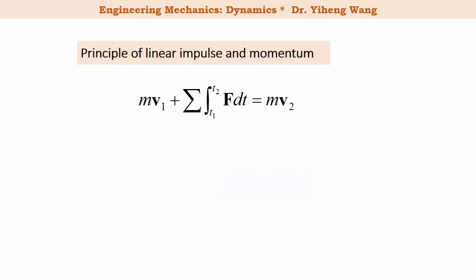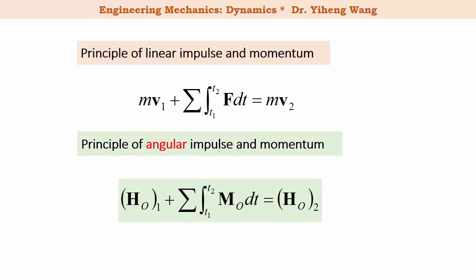Similar to the principle of linear impulse and momentum, we can now write the principle of angular impulse and momentum. This integration term is the angular impulse, which is the total moment about point O integrated from initial time t1 to final time t2. For this principle, you must choose only one reference point O and be consistent when calculating both the angular momentum and the angular impulse.